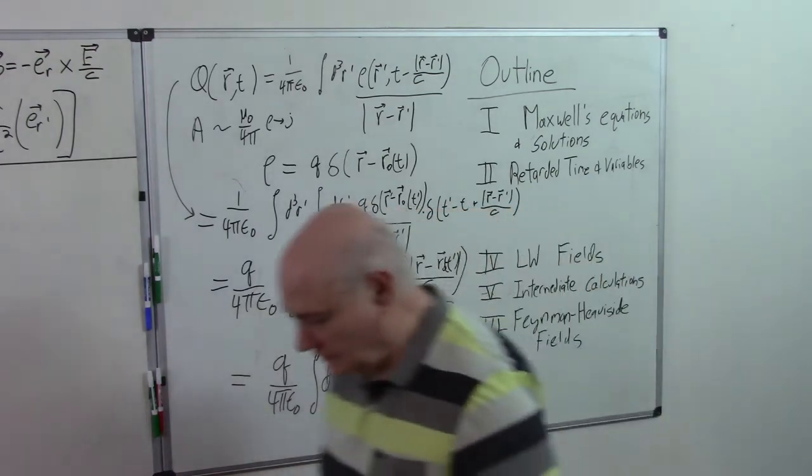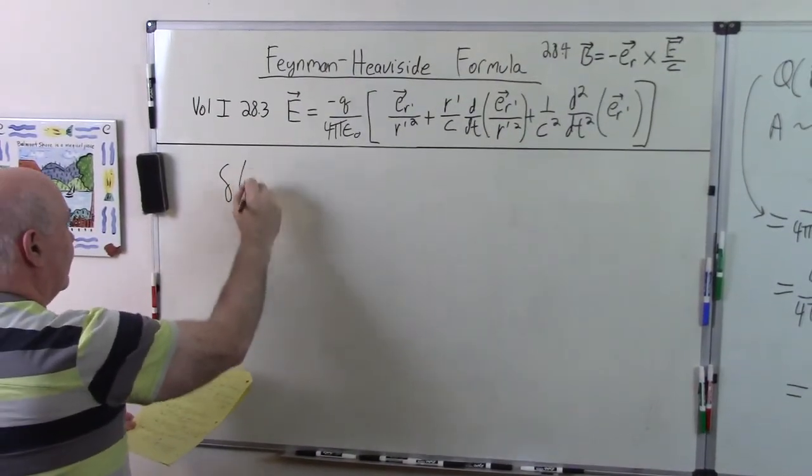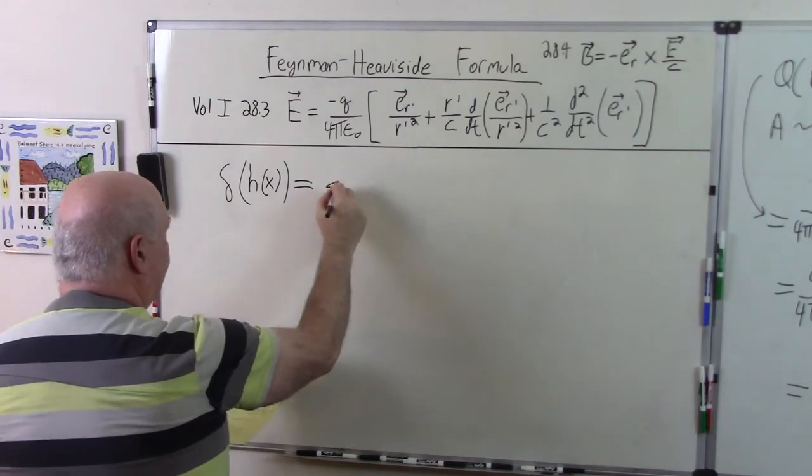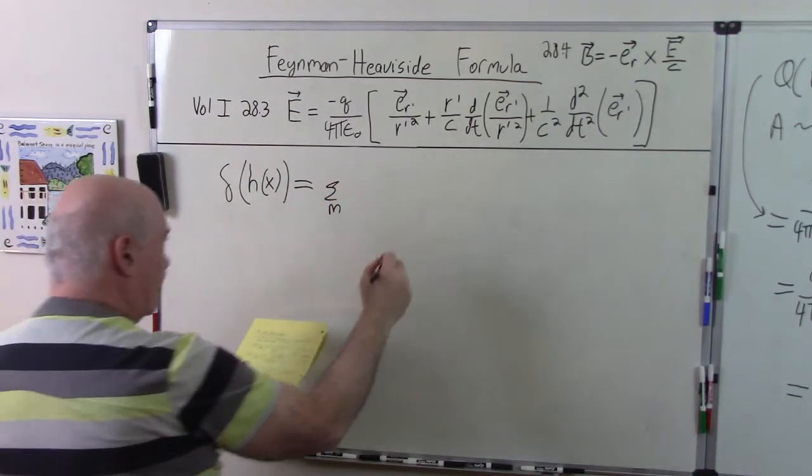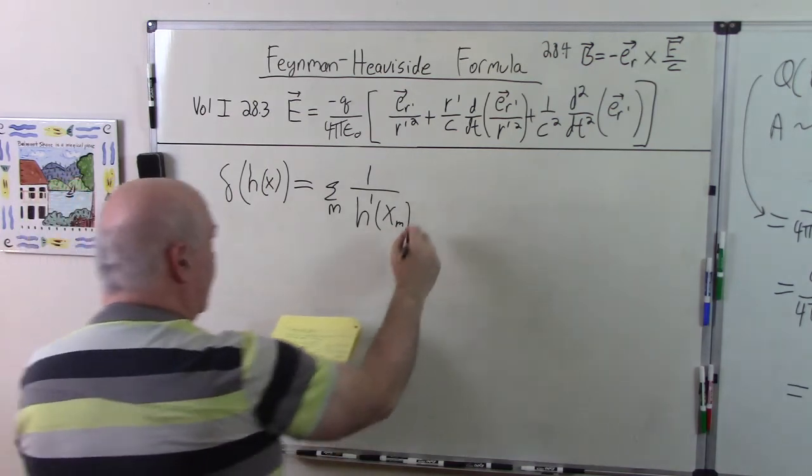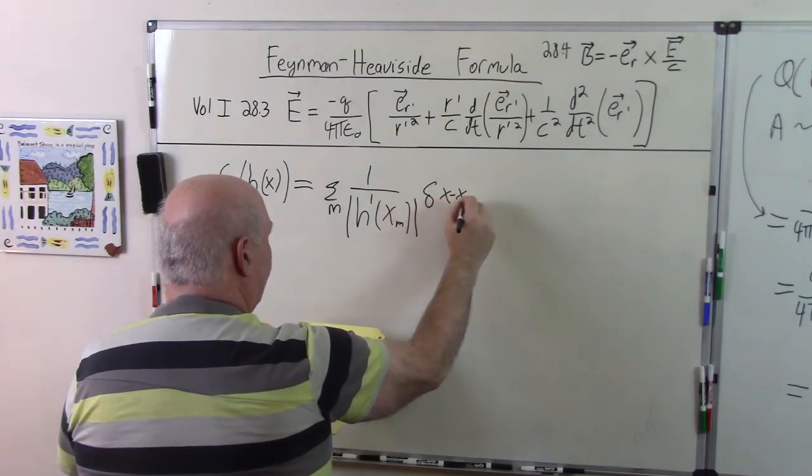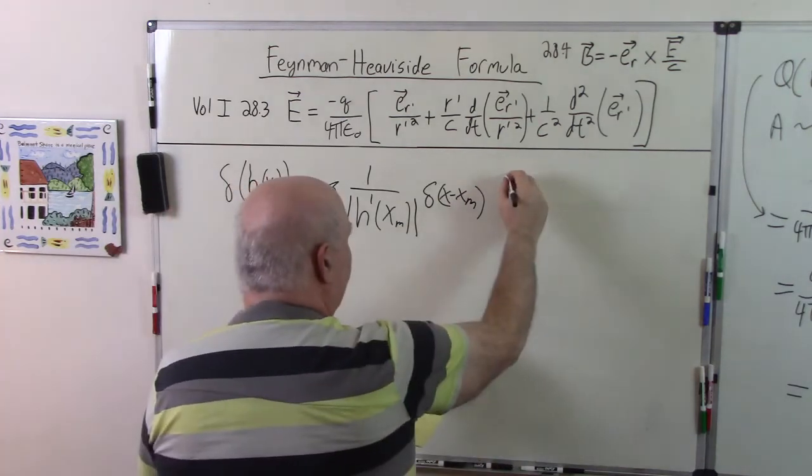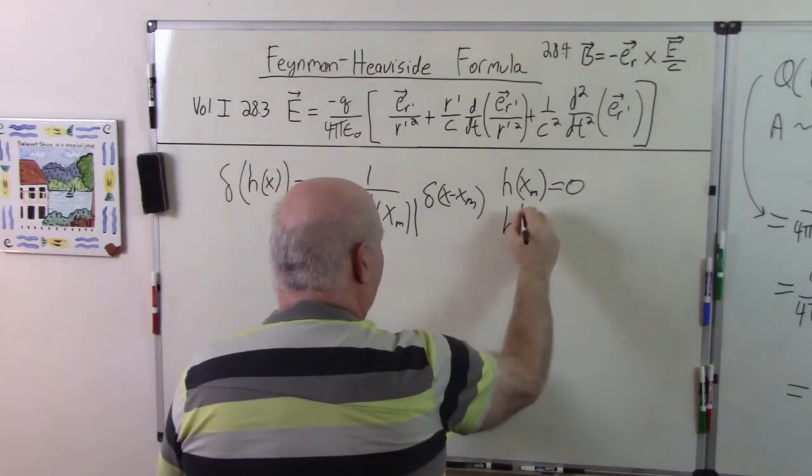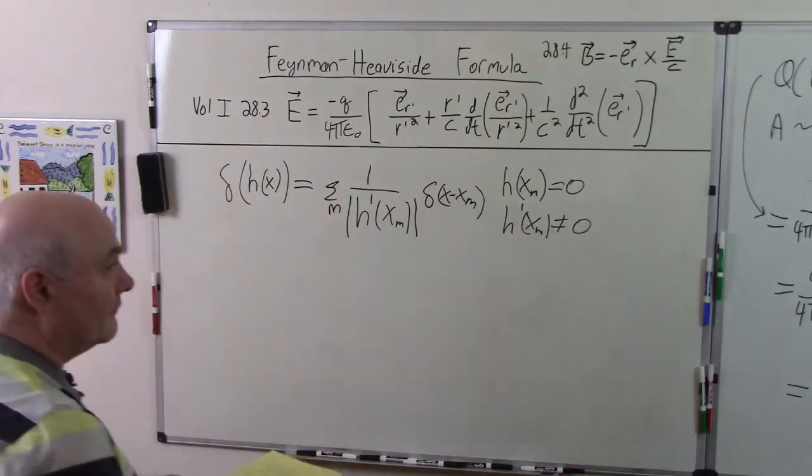You should remember this formula. Delta h of x is equal to the sum over m, 1 over |h'(x_m)| times delta of x minus x_m. And the idea here is that x_m is defined by h(x_m) equals 0. And so we take all simple roots, not equal to zero.